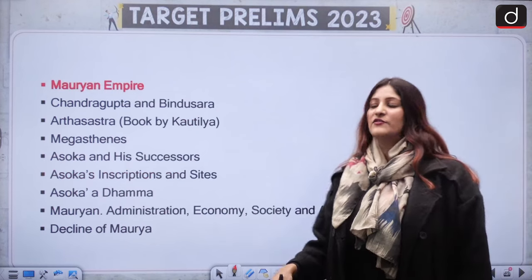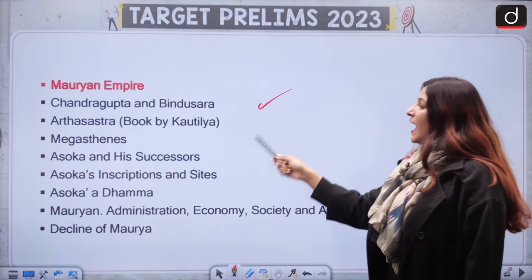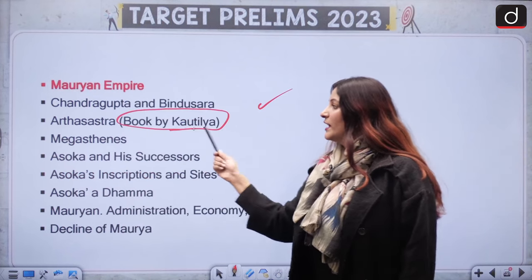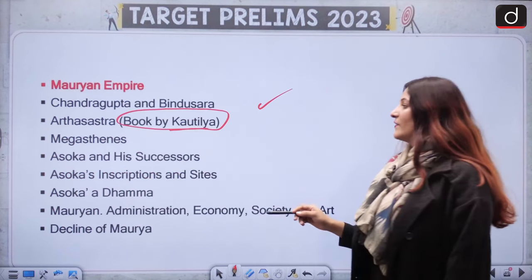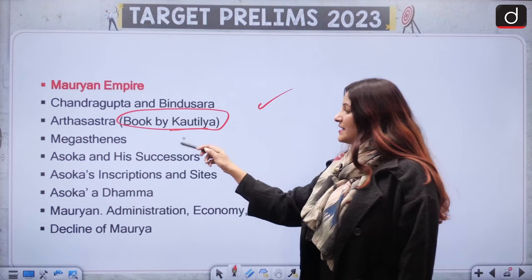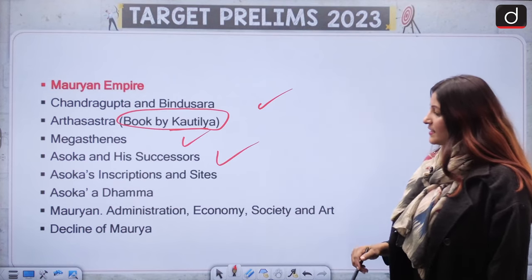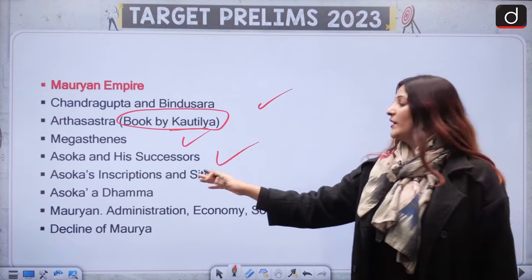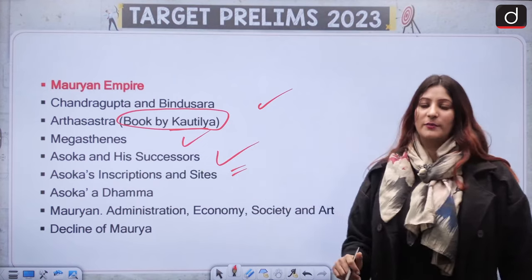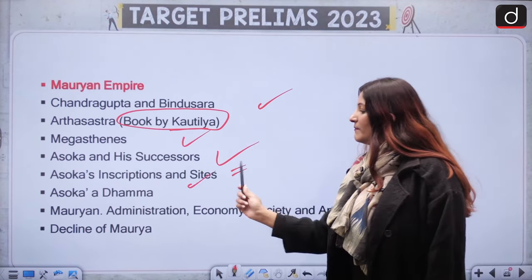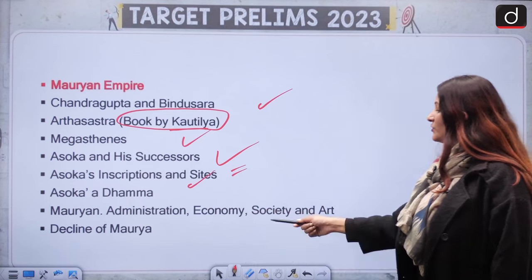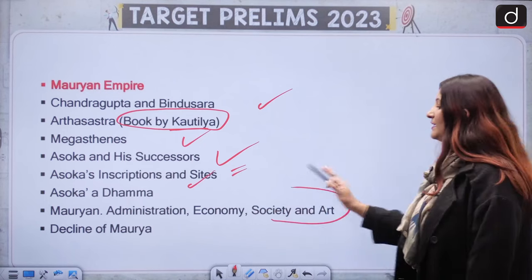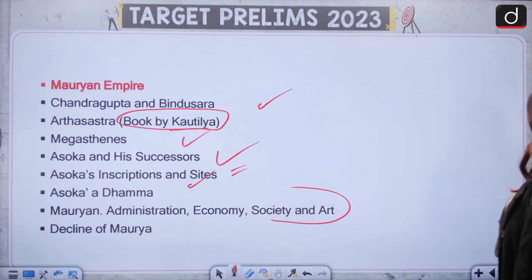The Maurya Empire: Chandragupta and Bindusara, and Arthashastra is very important — make sure you know things about Arthashastra. Megasthenes, Ashoka and his successors, Ashoka's inscriptions and sites — this is a very favourite part for prelims. Ashoka's Dhamma, Maurya administration, economy, society, art — useful for both prelims and mains — and decline of the Mauryas.